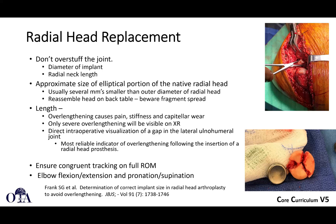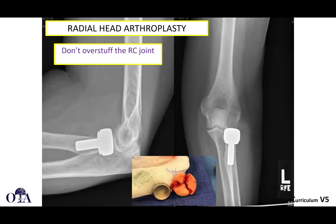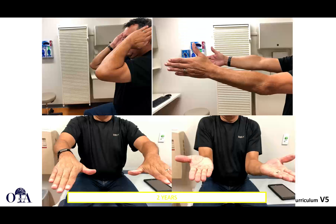Direct intraoperative visualization of a gap in the lateral ulnohumeral joint is the most reliable indicator of over-lengthening following insertion of the radial head prosthesis. After insertion, ensure congruent tracking through full range of motion — elbow flexion, extension, supination, and pronation — observed directly and under fluoroscopy. Don't overstuff the radiocapitellar joint when replacing these. Many of these implants are modular nowadays, allowing you to select the right size. Here you can see a reasonably good result with elbow flexion, extension, supination, and pronation at two years.